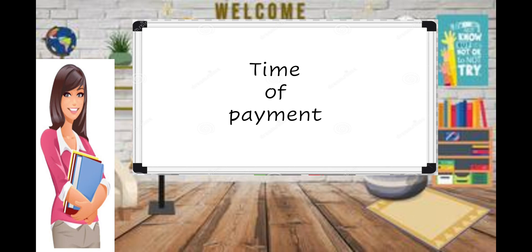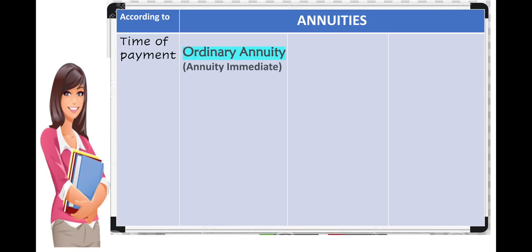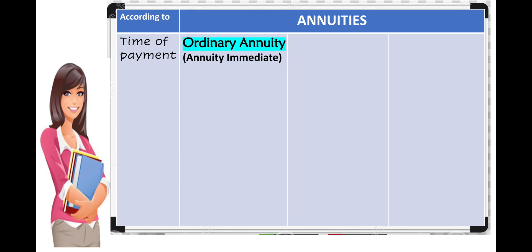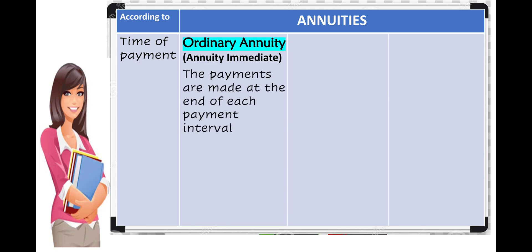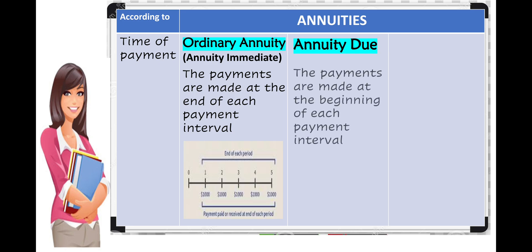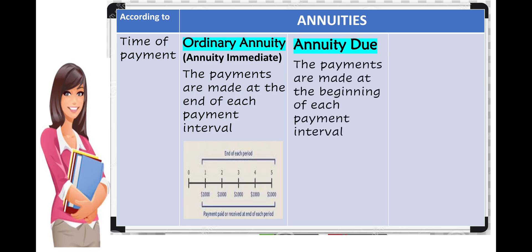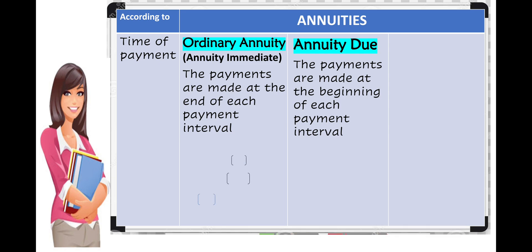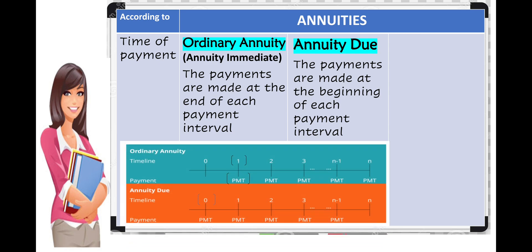Annuity is also classified according to time of payment. For ordinary annuity, the payments are made at the end of each payment interval. For annuity-due, the payments are made at the beginning of each payment interval. For example, in an ordinary annuity you get the item today and pay next month. For annuity-due, you get the item today and start paying now.